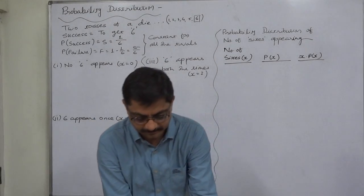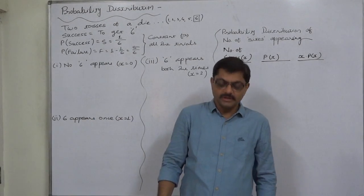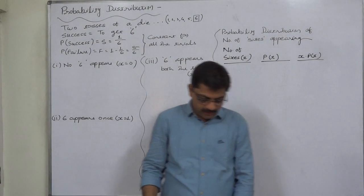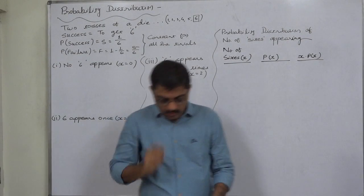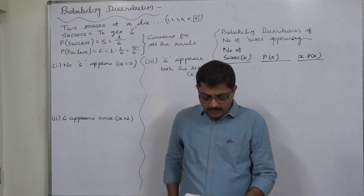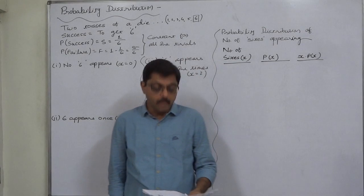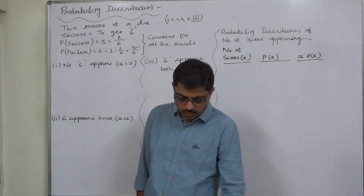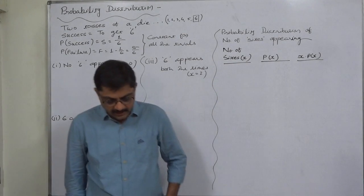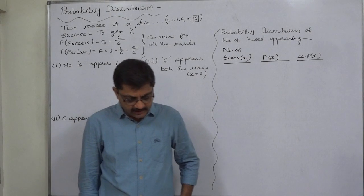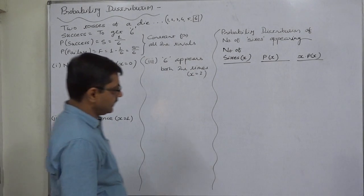Hello and welcome. This problem involves finding the probability distribution of the number of sixes in two tosses of a die, and hence obtaining its mean and variance.